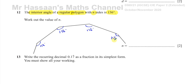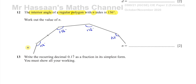We've got to work out how many sides there are. The number of sides and the number of angles are the same. There are two ways to deal with this question, and one of the ways is much easier than the other. I'll show you the easy way first, and then I'll show you the more complicated way.